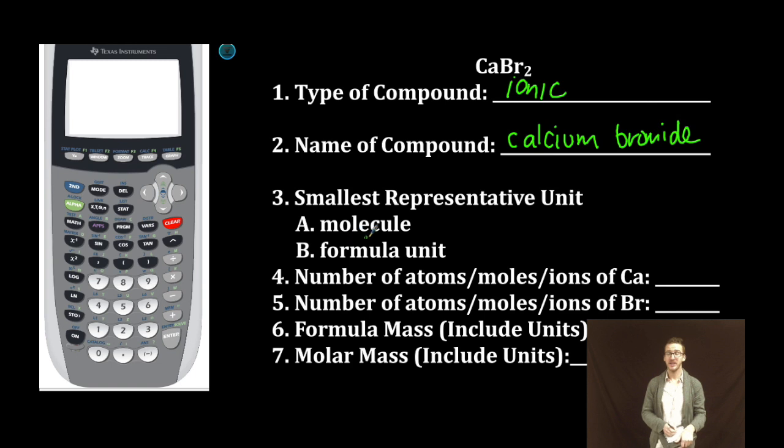Now because it's an ionic compound, we're gonna be talking about formula units. As I carefully examine my chemical formula, every formula unit can have one ion of calcium and two ions of bromine.